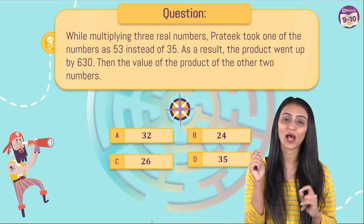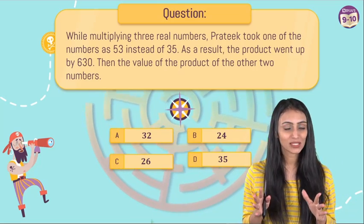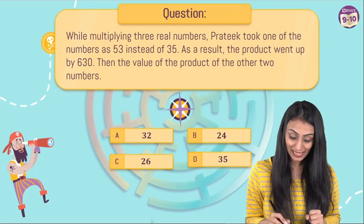Then the value of the product of the other two numbers is—you can see four options on the screen. You have to look for the right option. So take out your pens and notebooks and pause this video and take a few seconds to solve this question.